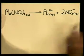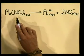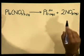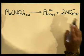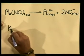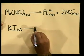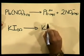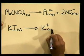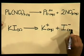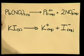Here is our first dissociation equation: lead nitrate will dissociate to form Pb²⁺ ions and NO₃⁻ ions. Now potassium iodide, formula KI, will also dissociate to form potassium ions and iodide ions, both in aqueous solution.